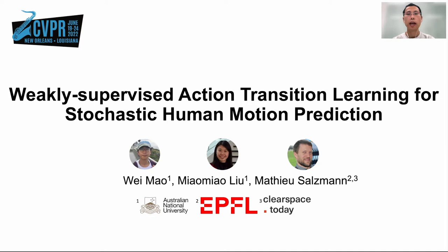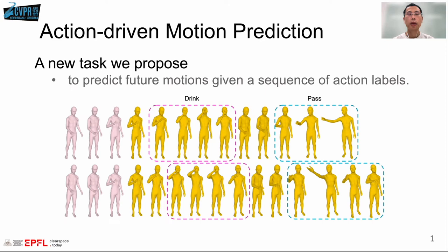Hi everyone. My name is Wei from ANU. I would like to introduce our work, Weakly Supervised Action Transition Learning for Stochastic Human Motion Prediction. This is a joint work with MiaoMiao and Matthew.